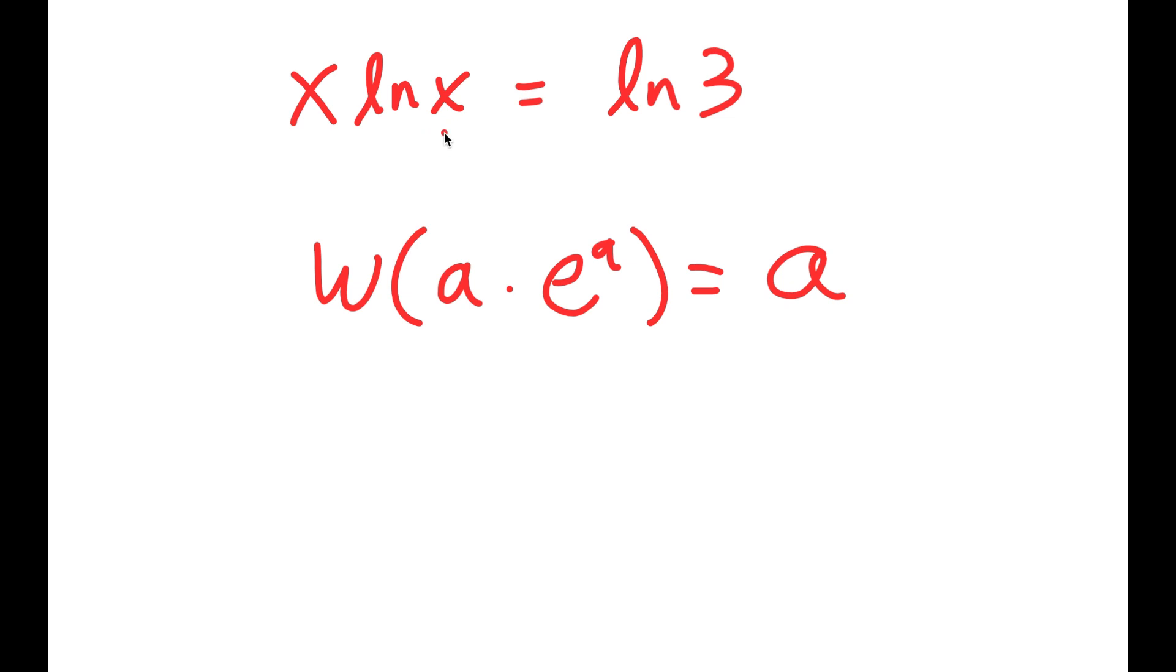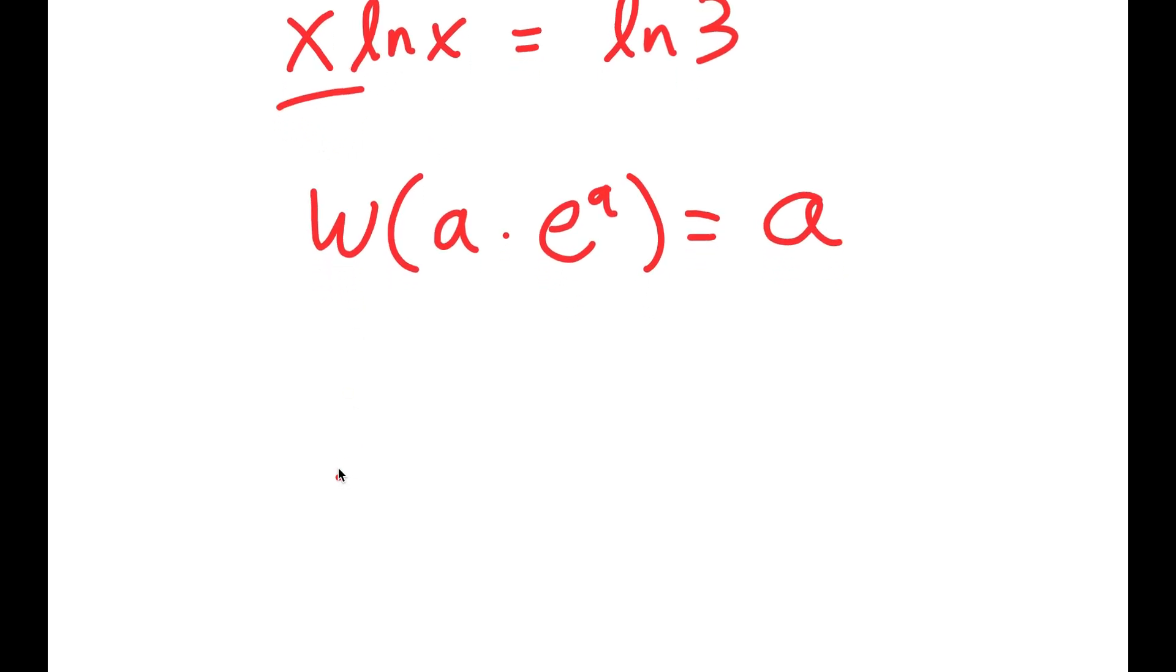Well, I'm going to start by rewriting this x as e to the power of ln of x, because e to the power of ln cancel out, so that's just x. So x is the same thing as e to the power of ln x, and I have this times ln x is equal to ln 3.